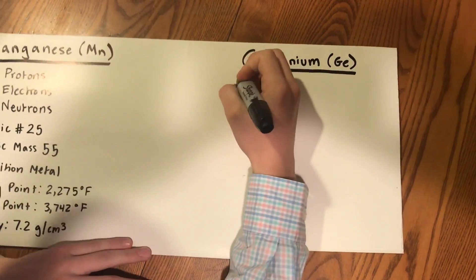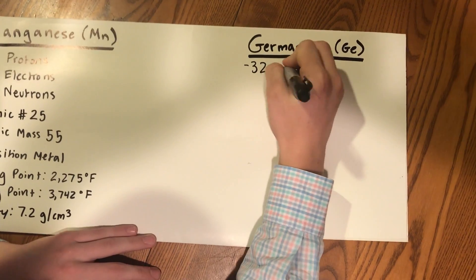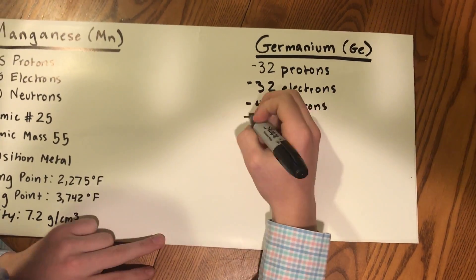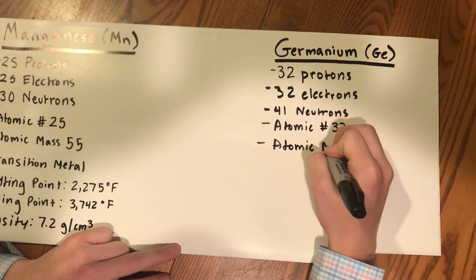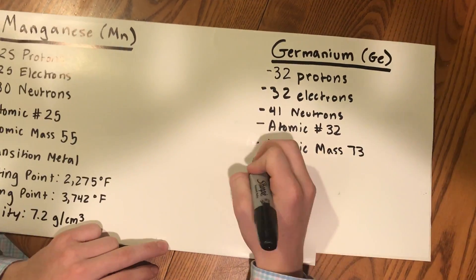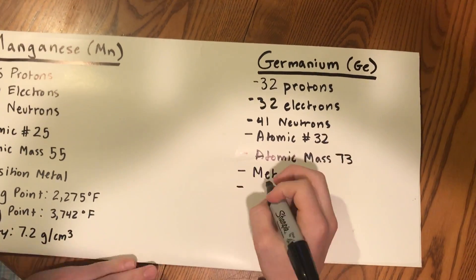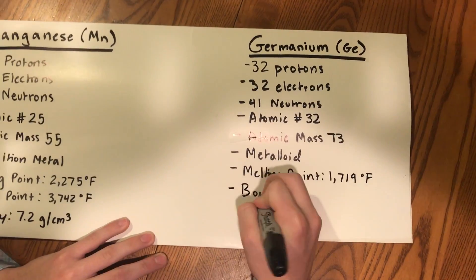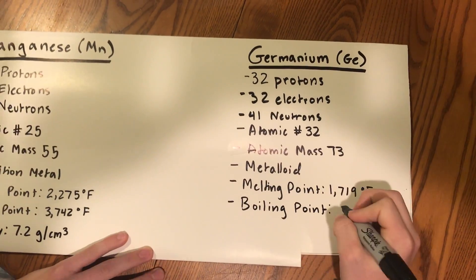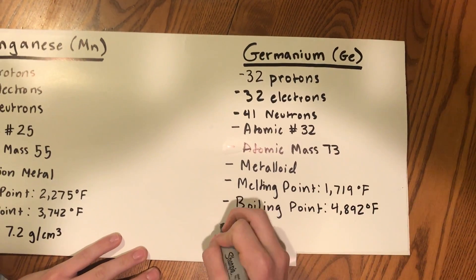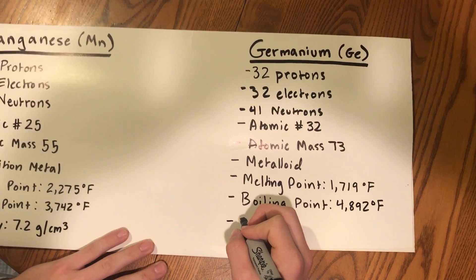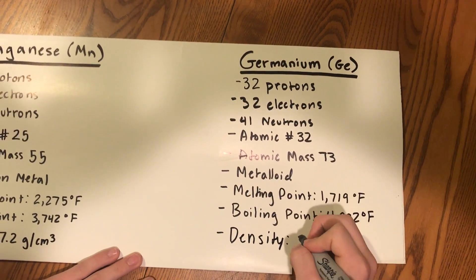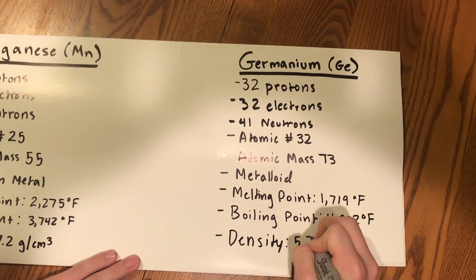Germanium's abbreviation is Ge. It has 32 protons, 32 electrons, 41 neutrons, an atomic number of 32, and an atomic mass of 73. It's a metalloid with a melting point of 1,719 degrees Fahrenheit, a boiling point of 4,892 degrees Fahrenheit, and a density of 5.3 grams per centimeters cubed.